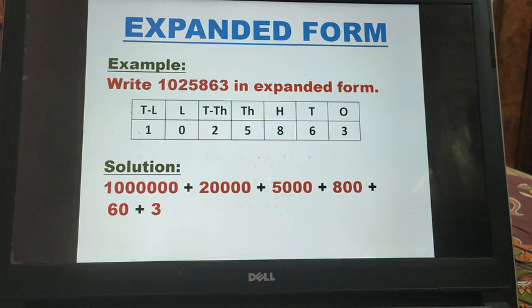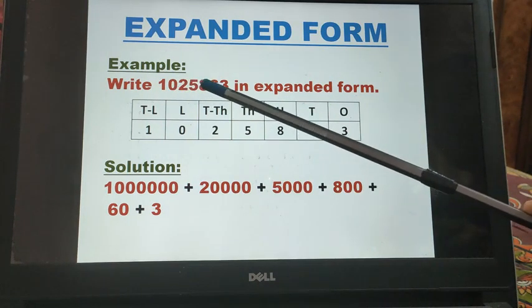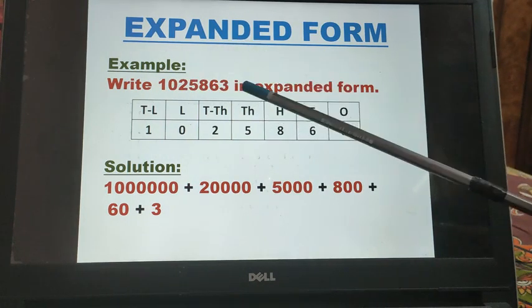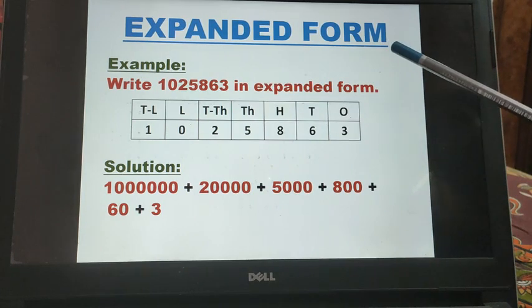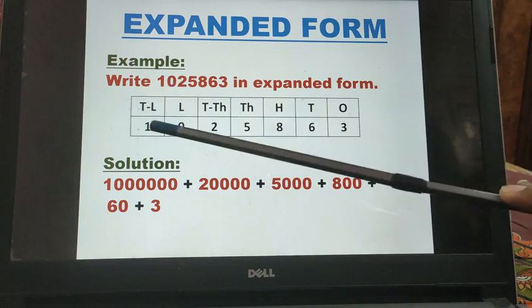Expanded form means when a number is written as a sum of the place value of its digits. Now understand this definition with an example. You have to write 1025863 in expanded form. So first you will find the place of all the numbers.